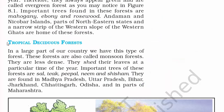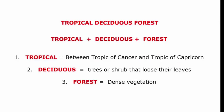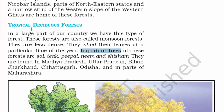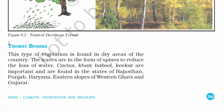The next type is tropical deciduous forest. 'Tropical' and 'forest' we already know; 'deciduous' means trees or shrubs that lose their leaves. The important trees found in tropical deciduous forests are sal, teak, peepal, neem and sheesham. They are found in Madhya Pradesh, Uttar Pradesh, Bihar, Jharkhand, Chhattisgarh, Odisha and parts of Maharashtra.